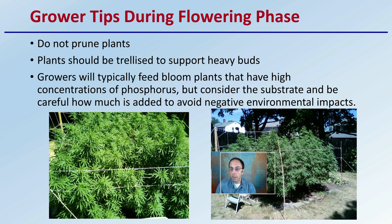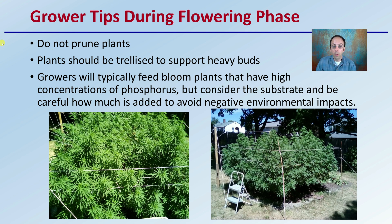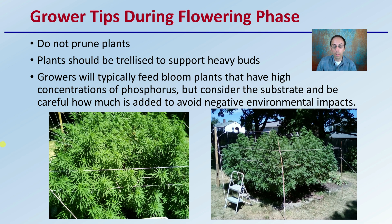Grower tips during the flowering phase: do not prune the plants during this phase. Plants should be trellised to support heavy bud production — as you can see here with excessive outdoor production, trellising doesn't have to be super fancy, you're just looking at a way of plant support. Growers will typically feed bloom fertilizer to plants that have high concentrations of phosphorus, but consider the substrate and be careful how much you add to avoid negative environmental effects. Phosphorus is needed, but a lot of growers are over-applying it to the plants.